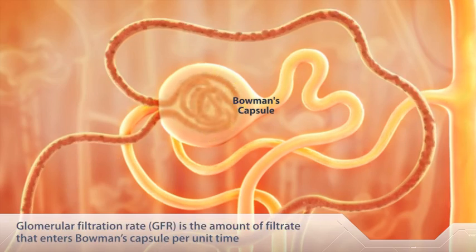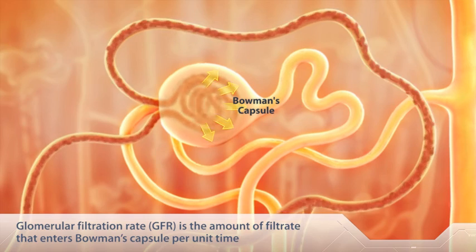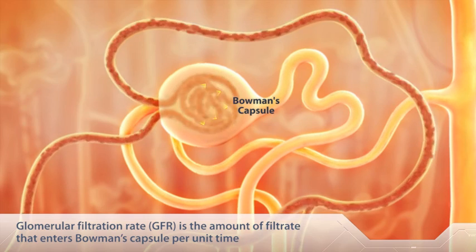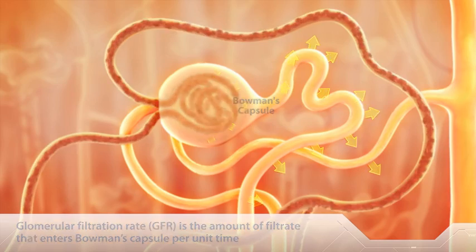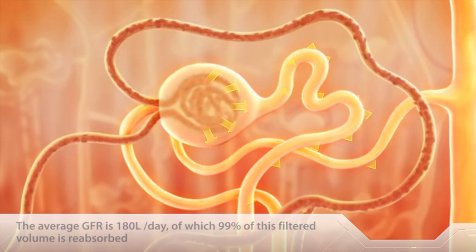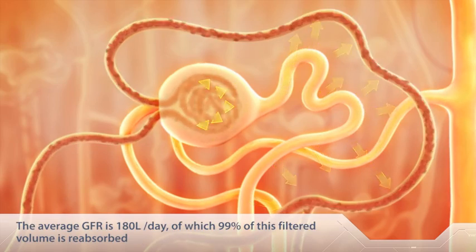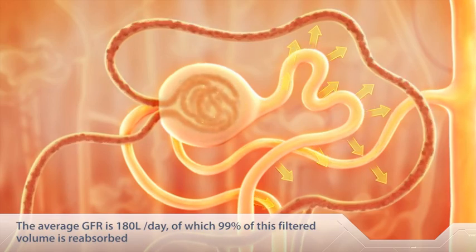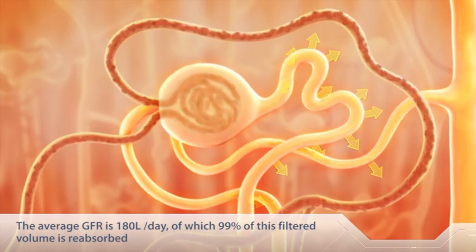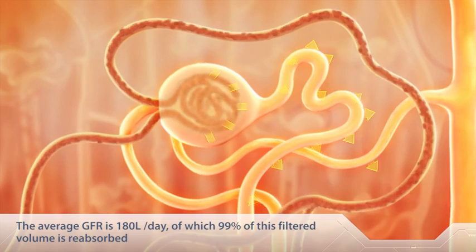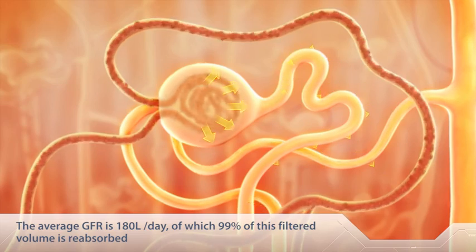Glomerular filtration rate, or GFR, is the amount of filtrate that enters Bowman's capsule per unit time. The average GFR is 180 litres per day, of which 99% is reabsorbed.